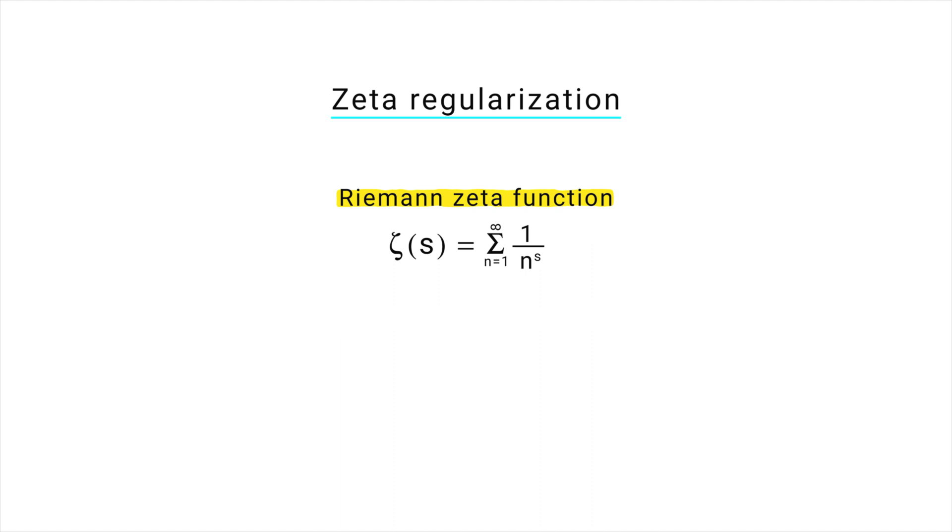Using analytic continuation, we can find a formula that works for all values of s, except for s equal to 1. And use that formula to assign a value to the zeta function at s equal to minus 1. This value is called regularized value.